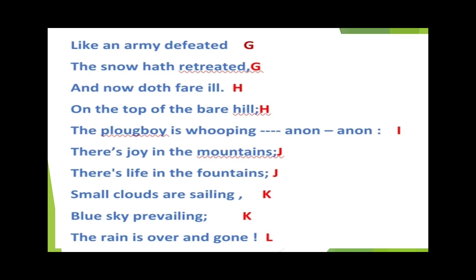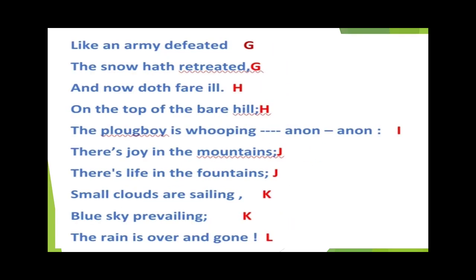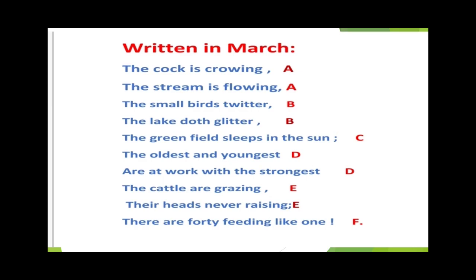Now let me read out the labeling of both paragraphs together. First paragraph: A, A, B, B, C, D, D, E, E, F. Second paragraph: G, G, H, H, I, J, J, K, K, L. So students, you can see that in this poem I have labeled the lines with letters on the basis of the rhyming words, and this is known as rhyming scheme.